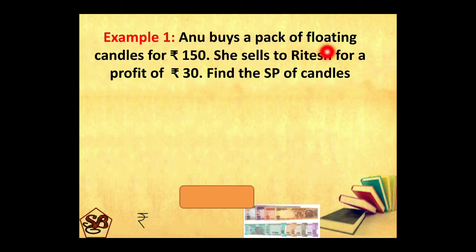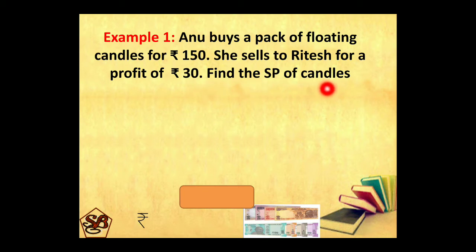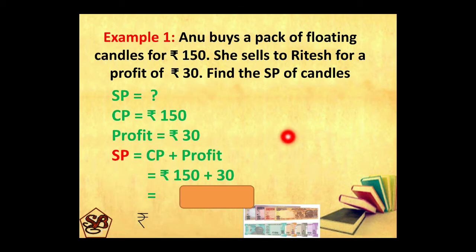Anu buys a pack of floating candles for Rs. 150. She sells to Ritesh for a profit of Rs. 30. Find the selling price of the candles. Now the cost price of candles is Rs. 150 and the profit is Rs. 30. So selling price will be cost price plus profit, that is Rs. 150 plus Rs. 30, which is equal to Rs. 180.